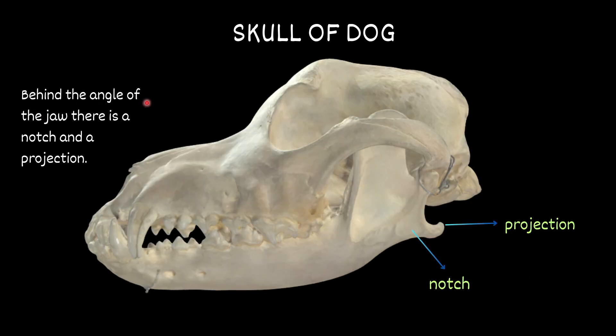Behind the angle of the jaw there is a notch and a projection — a nudge or depression just behind the angle of the mandible.